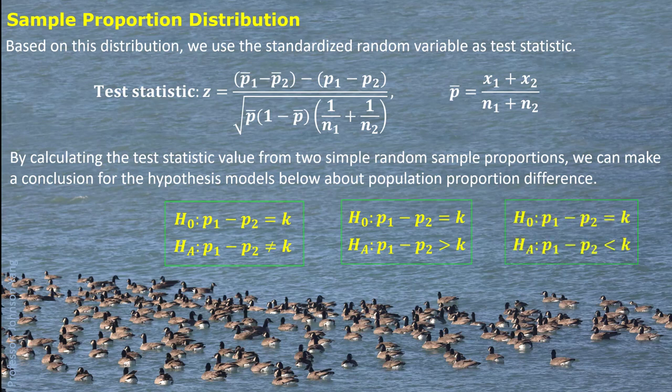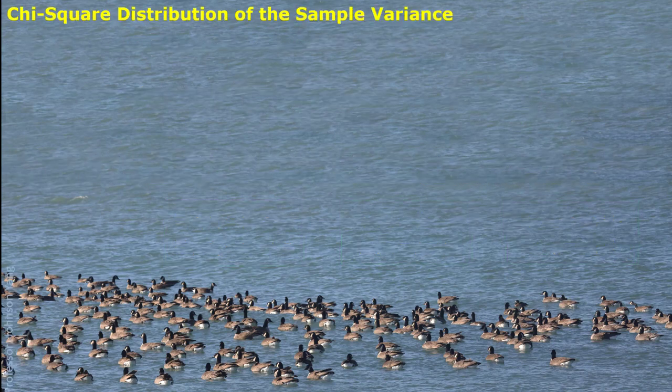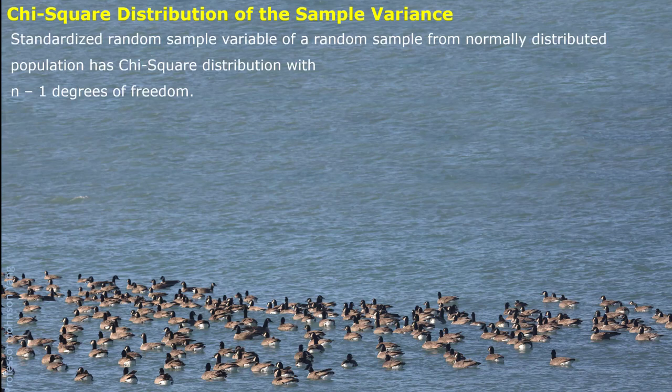When we think about another typical parameter, variance, the chi-square distribution is applied if we want to estimate population variance or test a statement about population variance. We use the sample variance from a random sample from the population. The variance is considered as a random variable, and the standardized random variable of the sample variance follows the chi-square distribution.